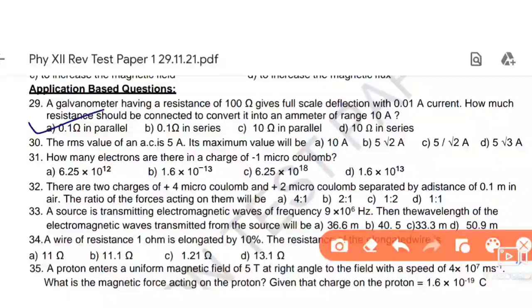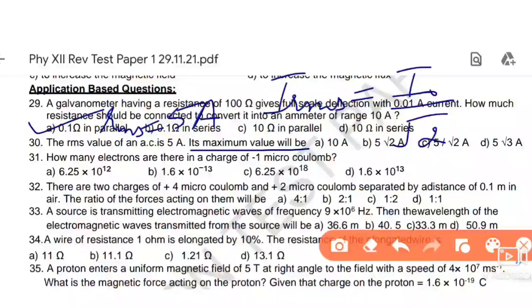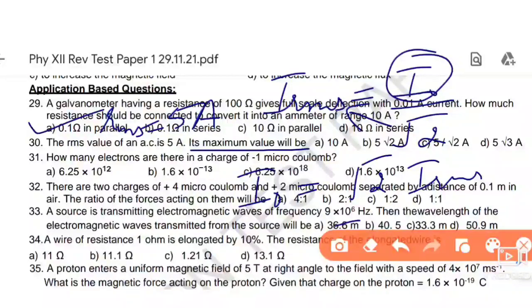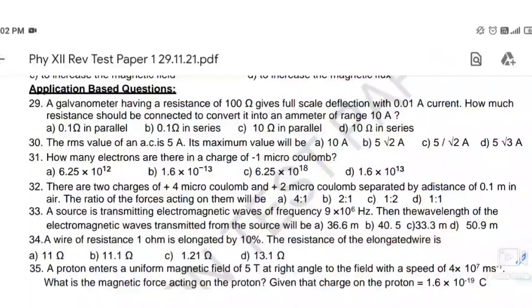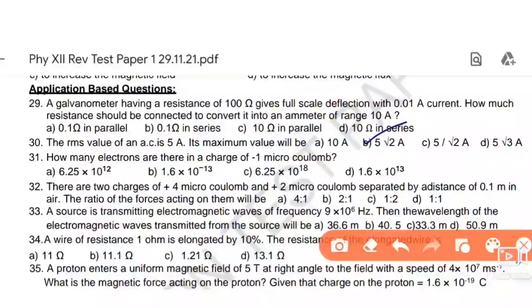Next, the RMS value of AC is 5 ampere. Its maximum value will be. We know RMS equals I not divided by under root 2. I not means maximum equals under root 2 times I RMS. I RMS is given as 5. So it becomes 5 under root 2. Option number B is the right answer.